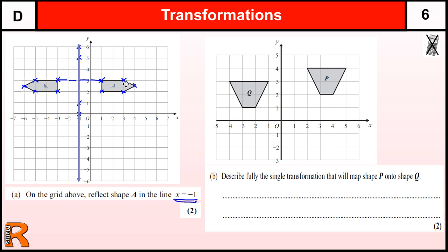There's one mark if you do a correct reflection - either over here looking like this, or one that's flipped down this way. Being in the correct place will give you two marks.